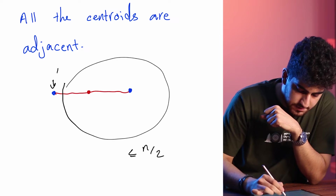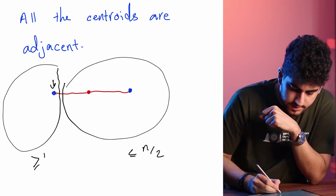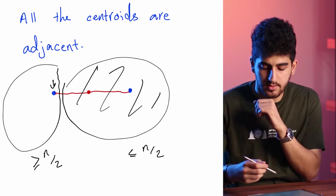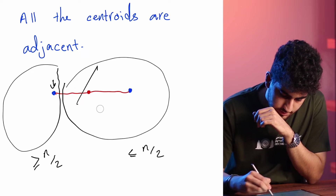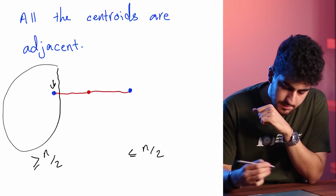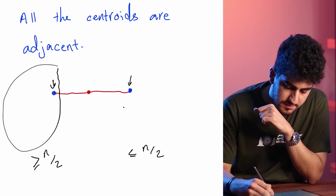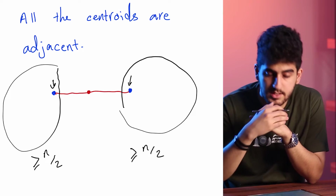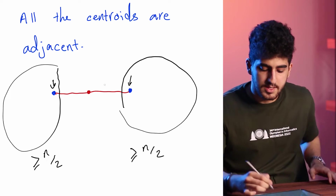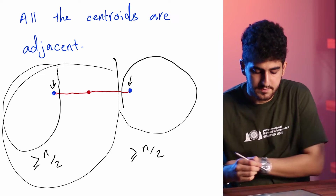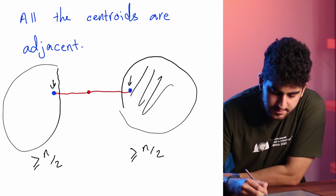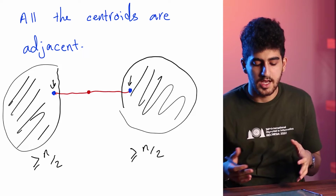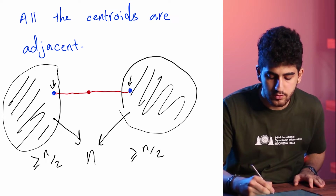Therefore, the number of vertices in here is greater than or equal to n/2. All the vertices except this part is greater than or equal to n/2. By the same approach, I can argue that the number of vertices in here is greater than or equal to n/2 as well. Why? Because the number of vertices in here is less than or equal to n/2. So now I can say that I have at least n/2 vertices in here and I have at least n/2 vertices in here. Therefore, I have n vertices in these two components.